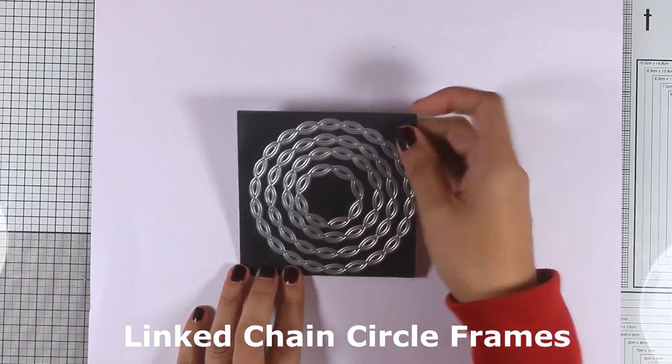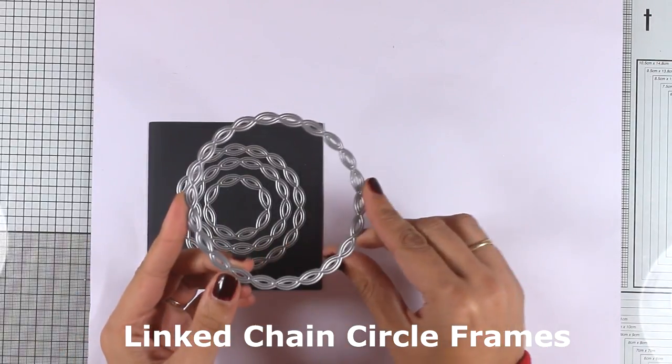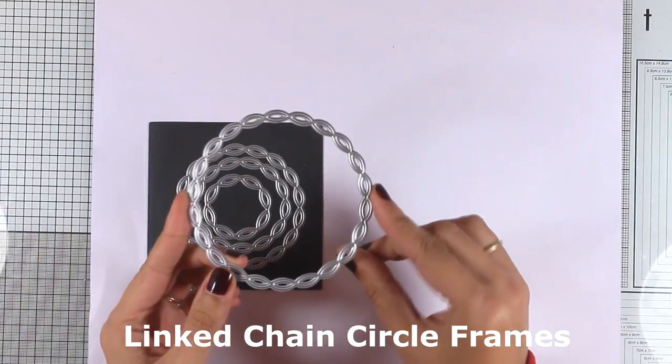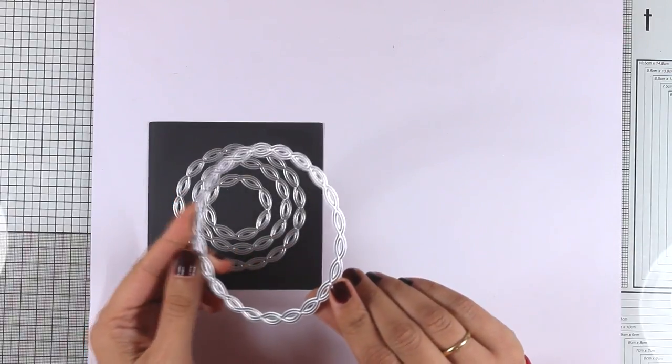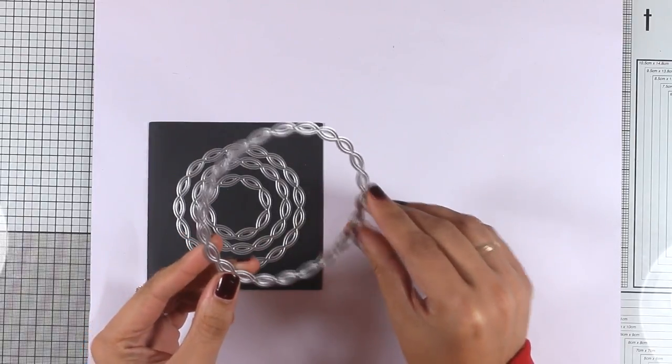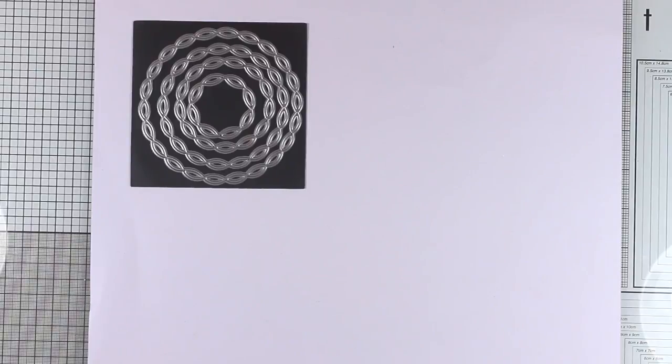These are the Linked Chain Circle Frames. You get four different frames, and I think they are beautiful to nest your focal points inside of them. They give you a beautiful intricate design, and you can pop that on top of your card to create beautiful dimensional elements.